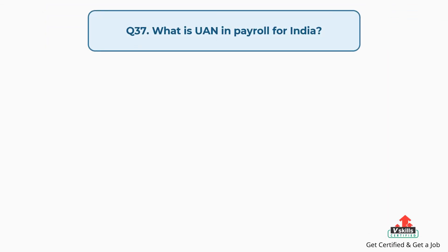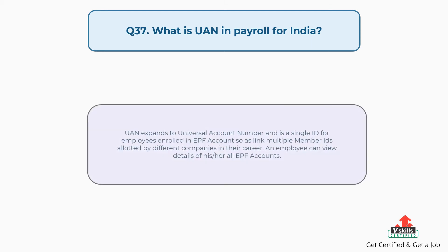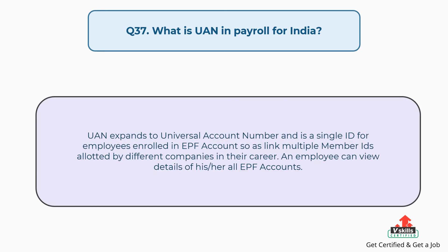Question number thirty-seven: What is UAN in payroll for India? The answer is, UAN expands to Universal Account Number and is a single ID for employees enrolled in EPF accounts who have linked multiple member IDs allotted by different companies in their career. An employee can view details of all his or her EPF accounts.